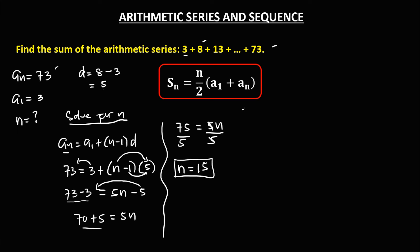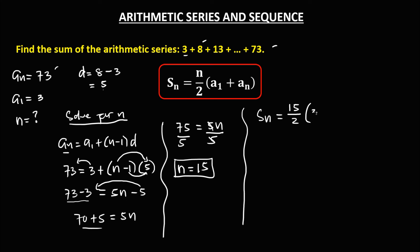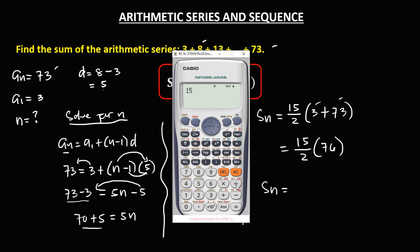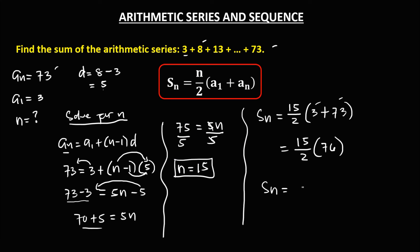Now we can find the sum. The sum equals n over 2 times (a sub 1 plus a sub n), so that's 15 over 2 times (3 plus 73), which is 15 over 2 times 76. That equals 15 times 38, which is 570. The sum of this arithmetic series is 570.